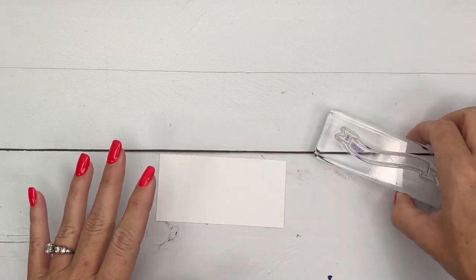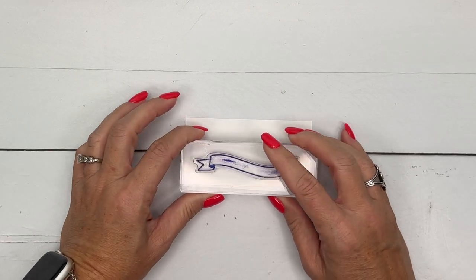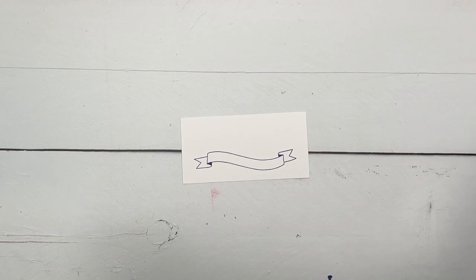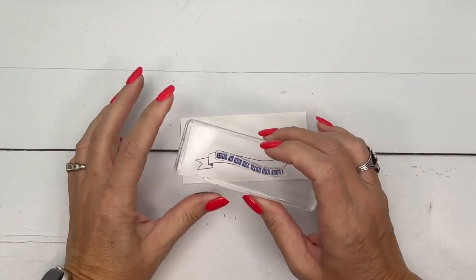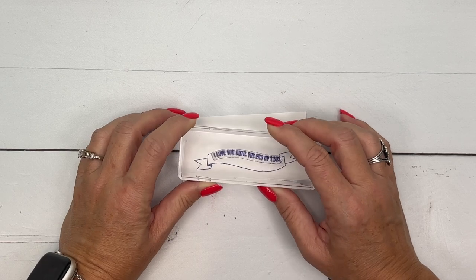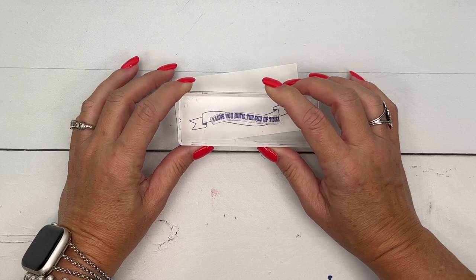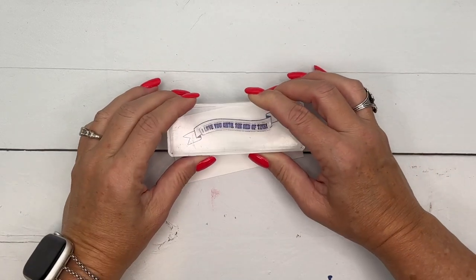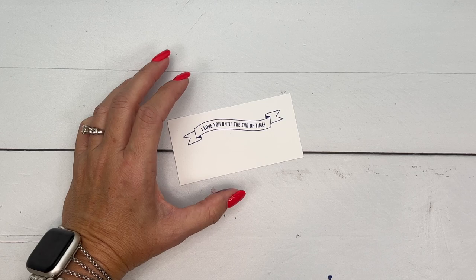Now, the only real stamp that I'm using from this set is the sentiment stamp and I'm going to take my banner with my starry sky. I'm going to stamp that here and we're going to get the sentiment. We're going to do the same color, starry sky and the sentiment fits in your banner, but don't make the same mistake I did and think my stamp is not on the block right. No, just turn your banner and it'll fit. I love that sentiment. I love you until the end of time.